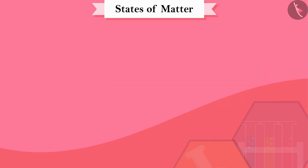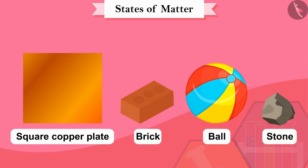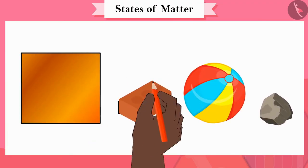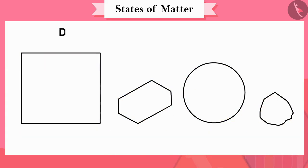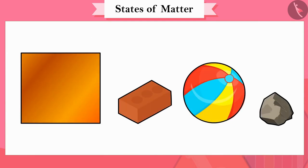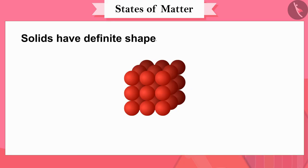First of all, we will study solid state. Collect these items: a square copper plate, brick, ball, and stone. Now draw the shape of all these objects with a pencil on paper. Do all these items have a definite shape and clear boundaries? All these things are in solid state of matter. Therefore, we can say that solids have definite shapes and distinct boundaries.